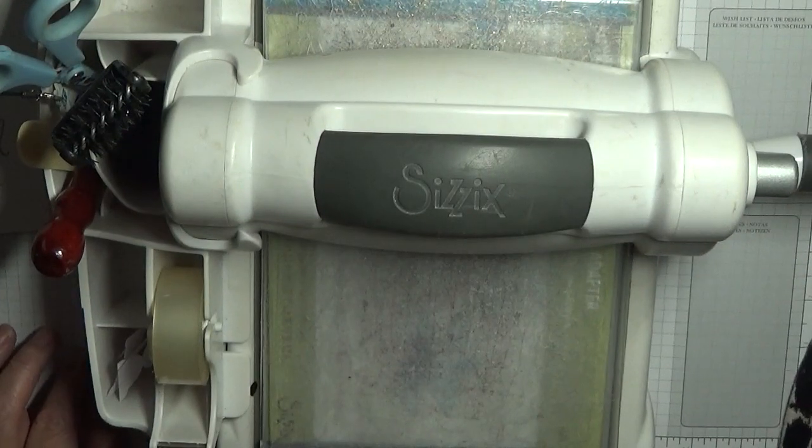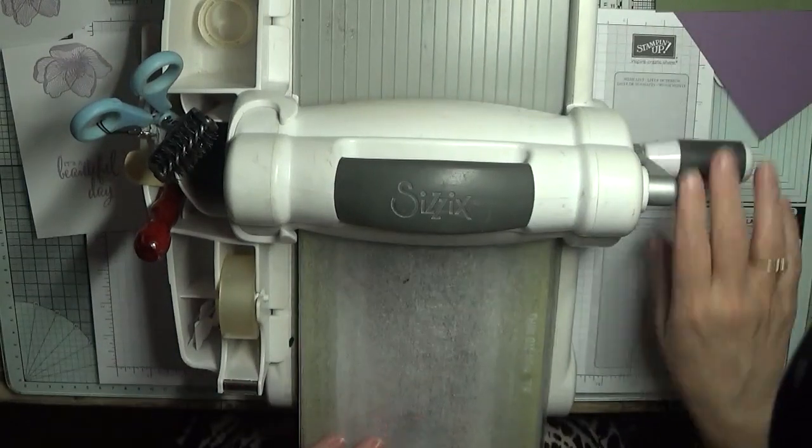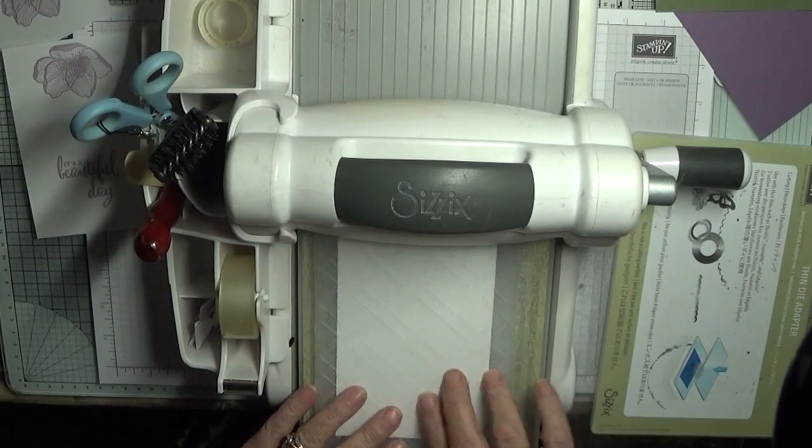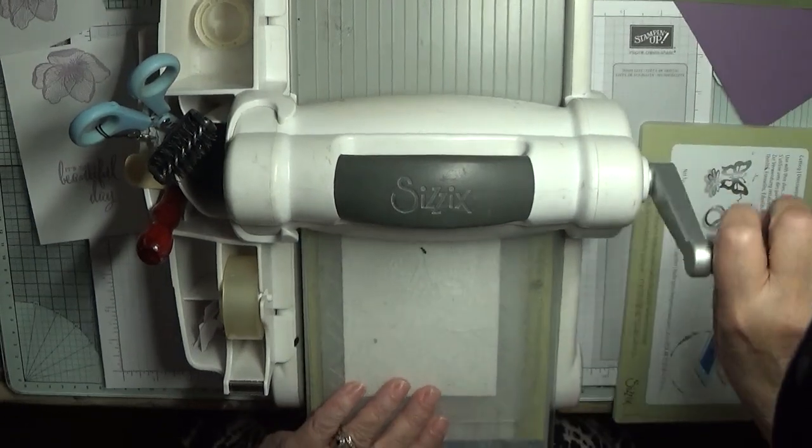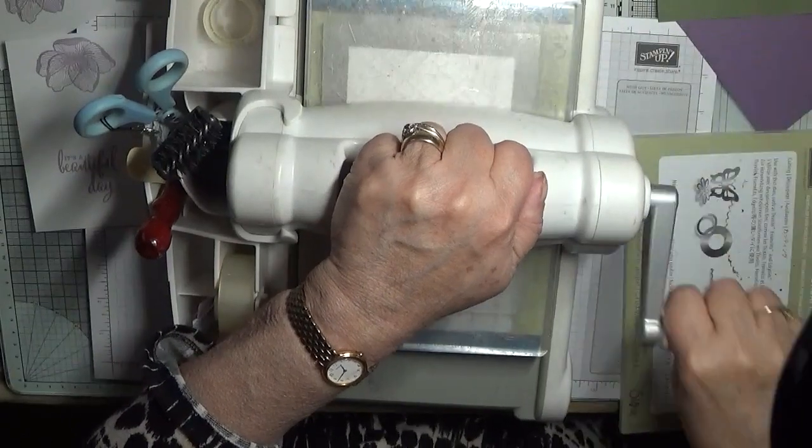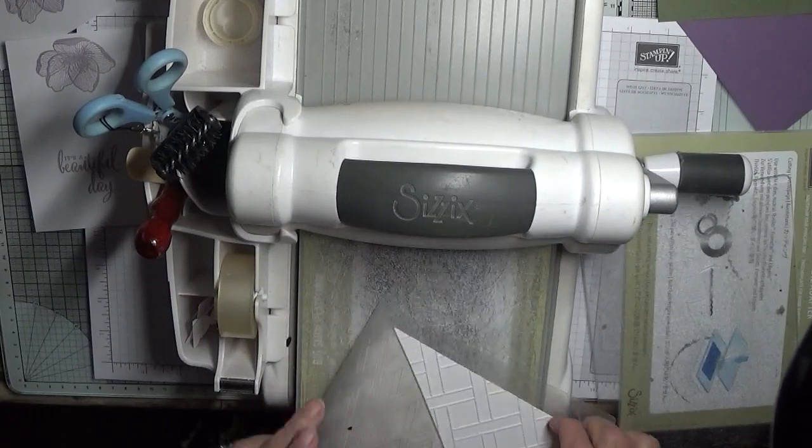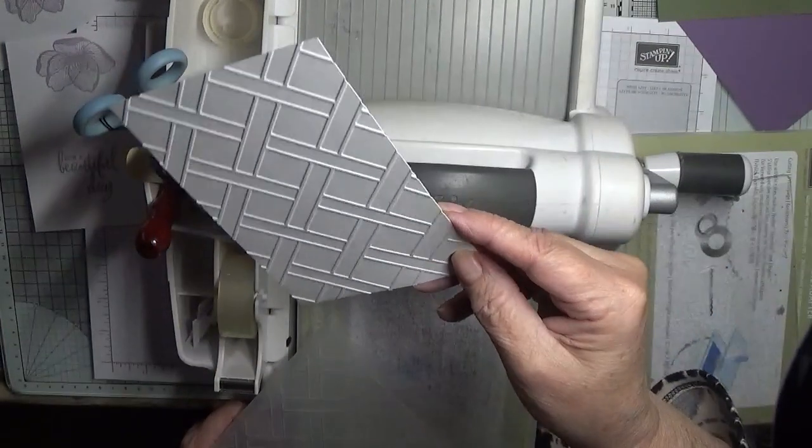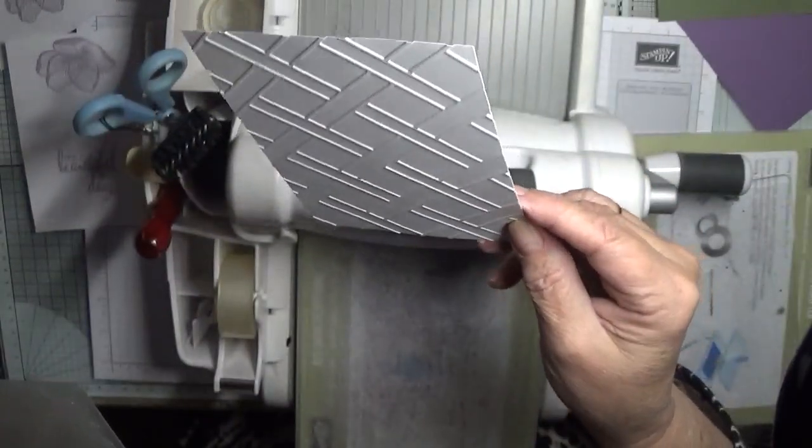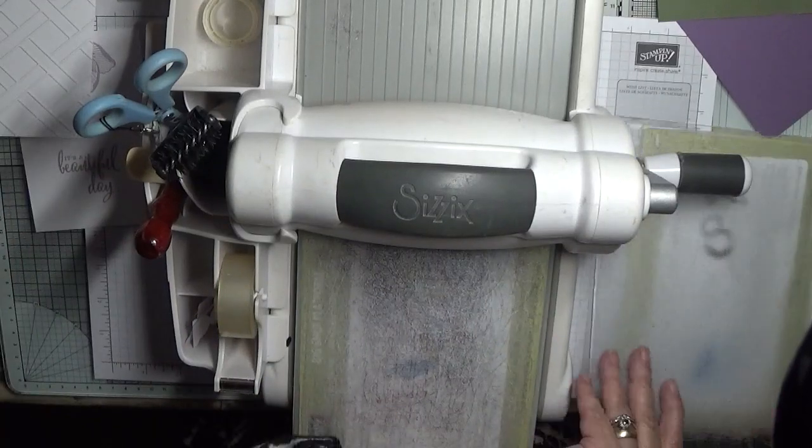All right, that's our stamping done. We'll bring the Big Shot up. Well I've got it right first time. Let's take this off and do our embossing first. I'll put our embossing folder through. And there's our lovely, that's the paper. I think it's quite a nice embossing folder, put that to one side.